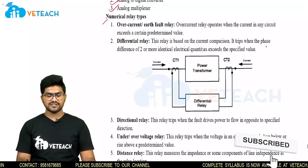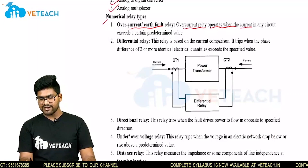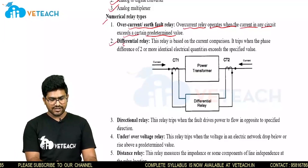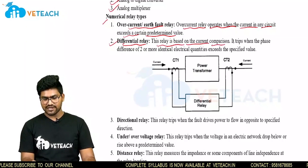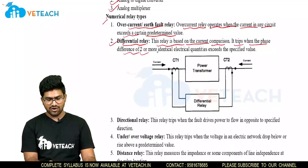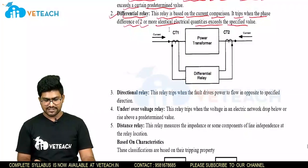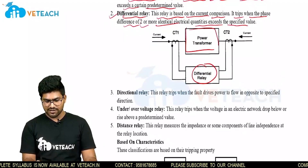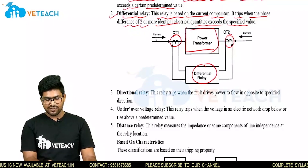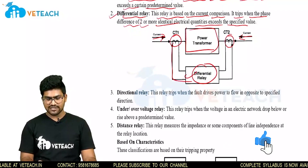There are different types of numerical relays. The first is overcurrent and earth fault relay — an overcurrent relay operates when the current in any circuit exceeds a certain predetermined value. Next is the differential relay, which is used based on current comparison. It trips when the phase difference of two or more identical electrical quantities exceeds the specified value. To connect the differential relay, on a power transformer the primary side has CT1 and the secondary side has CT2. Current enters from both sides, and between these two CTs the differential relay is connected.